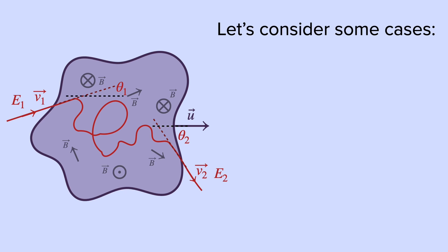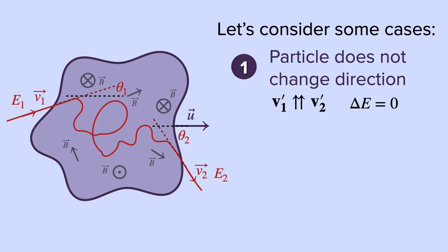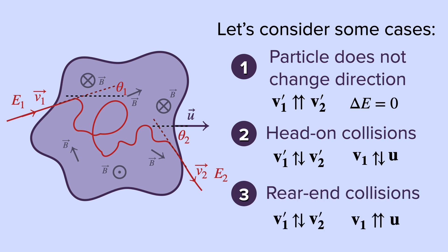Let's consider some cases. First, when the particle does not change direction. Two, when we have head-on collisions. And three, where we have rear-end collisions. In the first case, the outgoing particle velocity is parallel to the incoming one. This is not the case for the second and third.